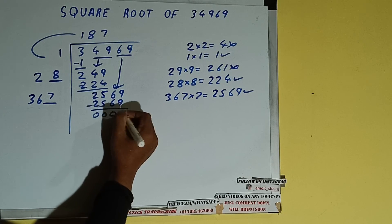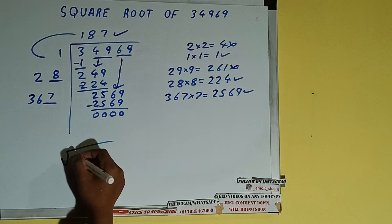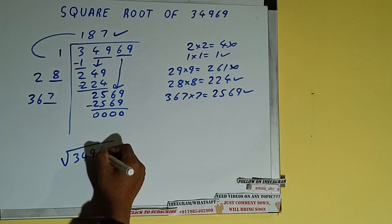Once we are left with 0, whatever is in the equation will be the answer, that is 187. So square root of 34969 will be 187. That's it.